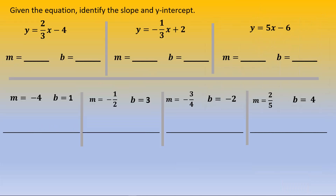Let's practice on some exercises. Given the equation, identify the slope and y-intercept. For the equation y equals 2/3 x minus 4, the coefficient of x — the number in front of x — 2 over 3, is the slope. m equals 2 over 3.